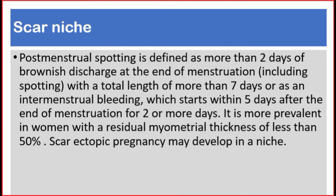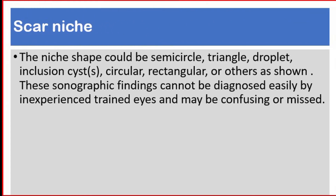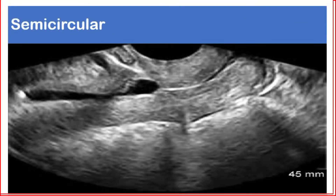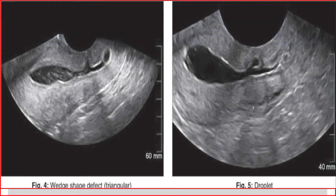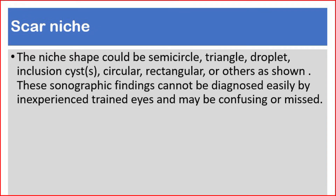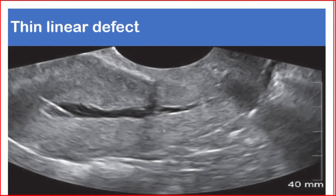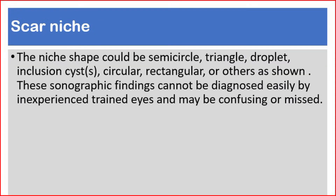Scar ectopic pregnancy may develop in a niche. The niche shape could be semicircle, triangular, droplet, inclusion cysts, circular, rectangular, or others as shown. These sonographic findings cannot be diagnosed easily by inexperienced eyes and may be confusing or missed.